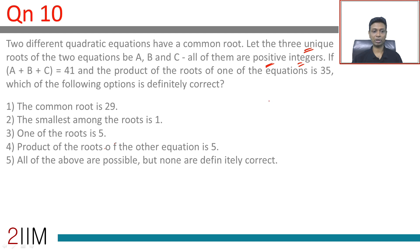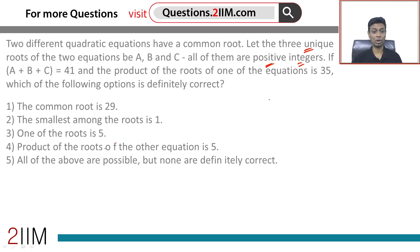A plus B plus C is 41. That's very tricky - there are lots of possibilities. The product of the roots of one of the equations is 35. This is big, and so I'm going to say the roots are A, B, and A, C. Product of the roots of one of the equations is 35.